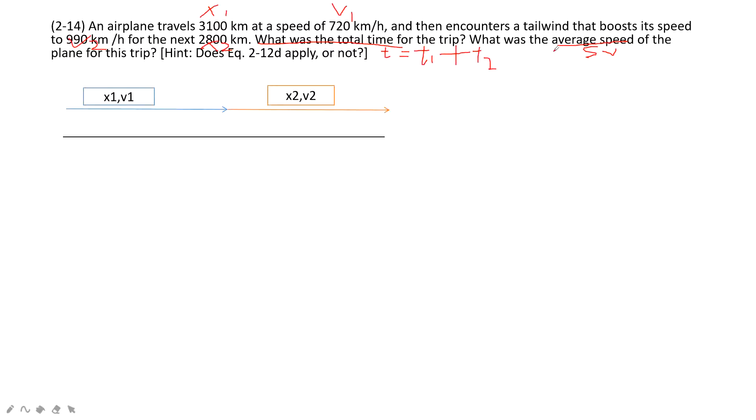And also, in this case, it wants the average speed. As we talk about, speed equals the distance divided by time taken. In this case, the distance is x1 plus x2 divided by total time t. So this is how we solve the problem.